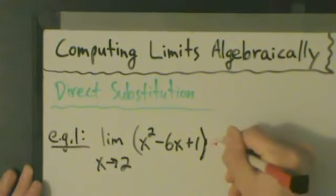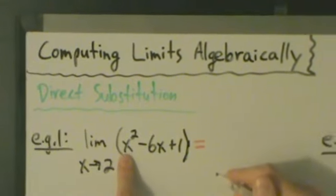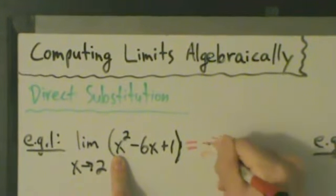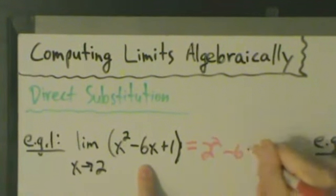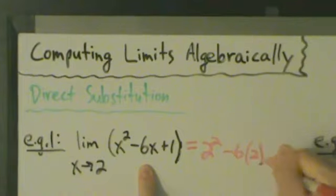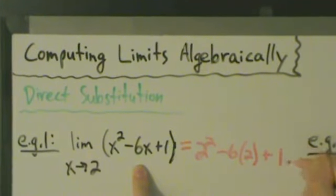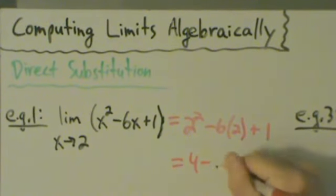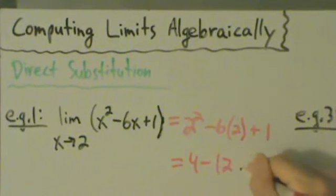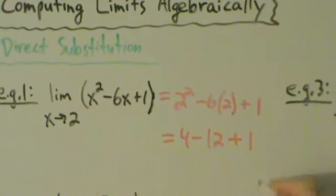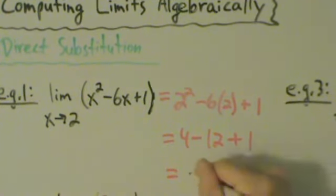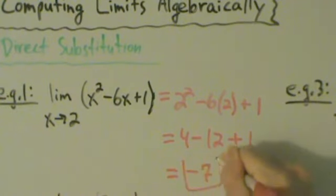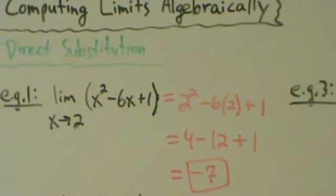So this is going to be equal to 2 squared minus 6 times 2 plus 1. So 2 squared is 4, minus 6 times 2 is minus 12, and then plus 1. When we simplify that, we have 4 minus 12 is negative 8, plus 1 is negative 7. And that's our answer for Example 1.